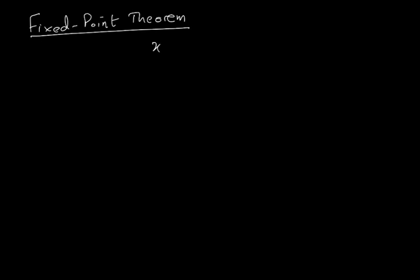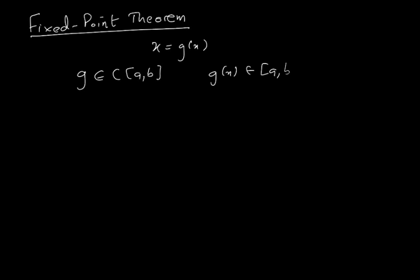The problem we're trying to solve is x equals g(x) — that's the fixed point problem. For the purpose of this theorem, we assume that g belongs to C[a,b], meaning it's continuous on the interval [a,b], and that g(x) itself belongs to this interval, because g(x) and x are going to be equal for the fixed point case, for all x in [a,b].